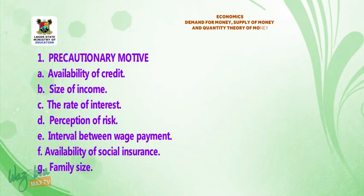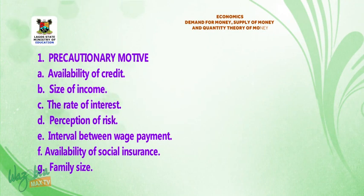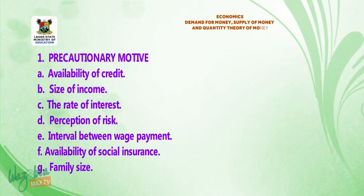Determinants of the precautionary motive include: availability of credit, size of income, the rate of interest, perception of risk, interval between wage payments, availability of social insurance, and family size.